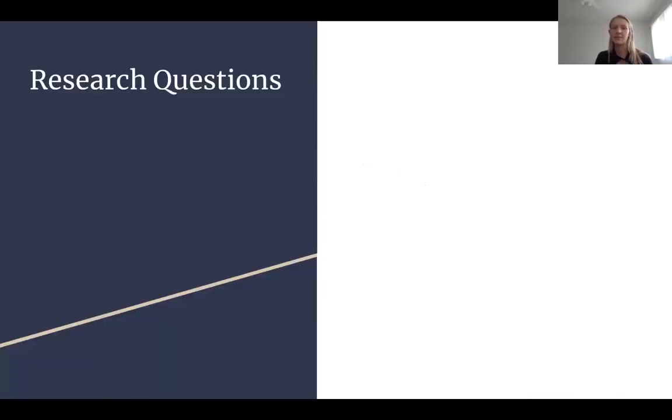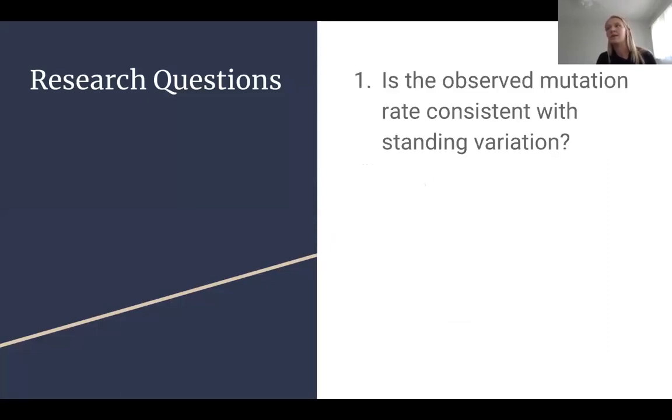That brought me to some of these other bigger research questions. The first being, is the observed mutation rate consistent with the standing variation that we see in the reference genome? The reference genome for the Pacific oyster isn't the greatest reference genome out there, and I was just really interested in looking at if this really aligns with what we are seeing in nature.